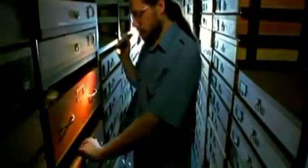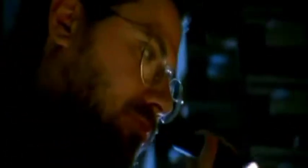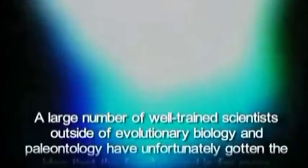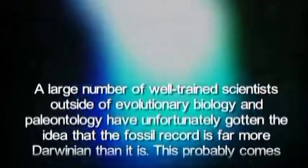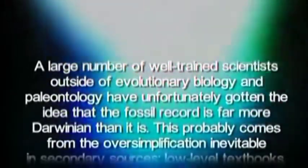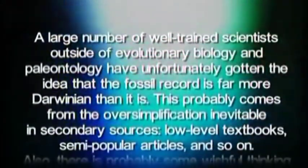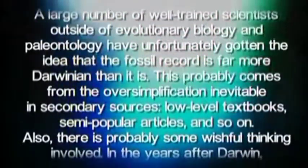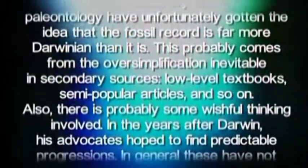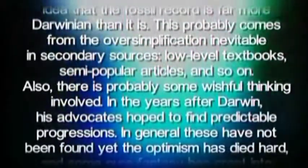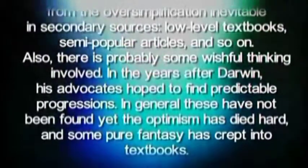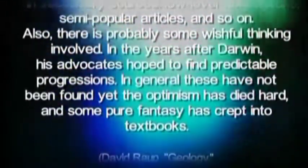Whenever the fossil record is mentioned, most people mistakenly assume that there is a positive relationship between the record and Darwin's theory. However, an article in New Scientist by David Raup, a professor of geology from Harvard, Rochester, and Chicago universities, refers specifically to this error: "A large number of well-trained scientists outside of evolutionary biology and paleontology have unfortunately gotten the idea that the fossil record is far more Darwinian than it is. This probably comes from the oversimplification inevitable in secondary sources — low-level textbooks, semi-popular articles, and so on. Also, there is probably some wishful thinking involved. In the years after Darwin, his advocates hoped to find predictable progressions. In general, these have not been found, yet the optimism has died hard, and some pure fantasy has crept into textbooks."